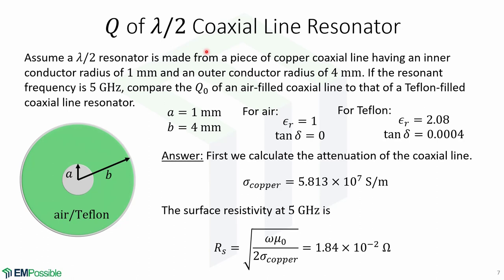Now let's look at an example of the Q factor of a half-wavelength coaxial line resonator. Assume a half-wavelength resonator is made from a piece of copper coaxial line having an inner conductor radius of 1 mm and an outer conductor radius of 4 mm. If the resonant frequency is 5 GHz, compare the unloaded Q of an air-filled coaxial line to that of a Teflon-filled coaxial line resonator. Here is a picture of the coaxial line with these dimensions, inner radius a equals 1 mm and outer radius b equals 4 mm.